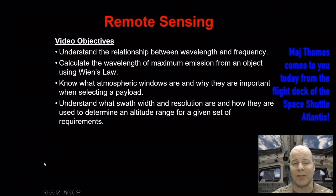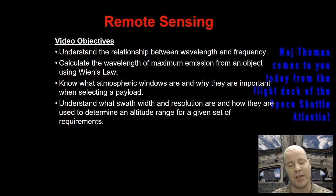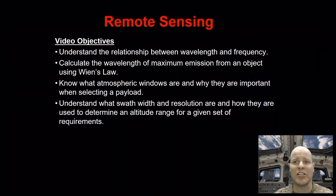Today's video is all about remote sensing, a brief overview of the concepts we want you to understand for our course. Our first objective is to understand the relationship between wavelength and frequency. Second, we're going to ask you to calculate the wavelength of maximum emission from an object using Wien's Law. Third, you're going to know all about atmospheric windows, what they are, why they're important, and why they help us in determining what payloads we should choose. Fourth, you should understand what swath width and resolution are and how they're going to be used to determine our altitude range given a set of requirements.